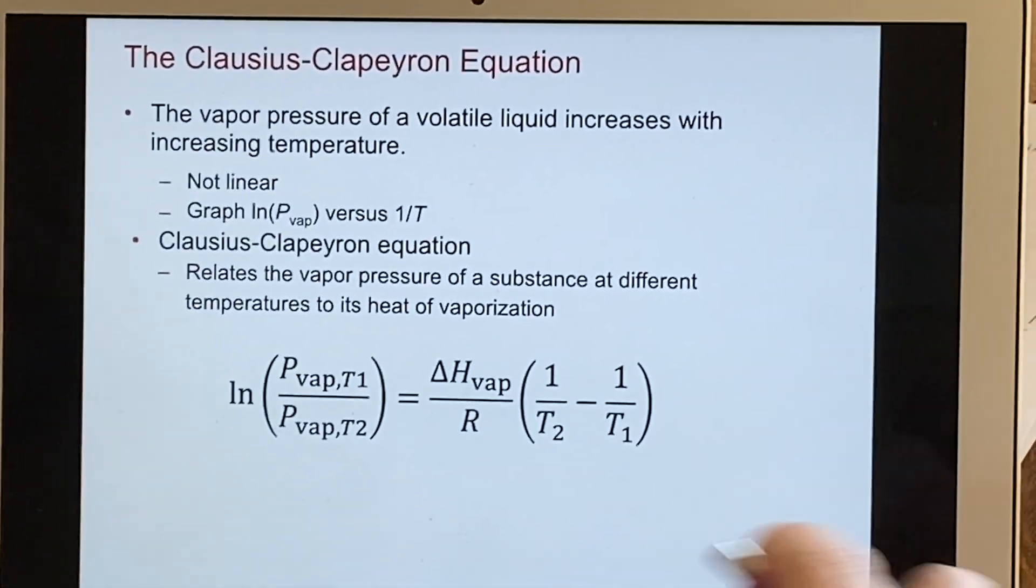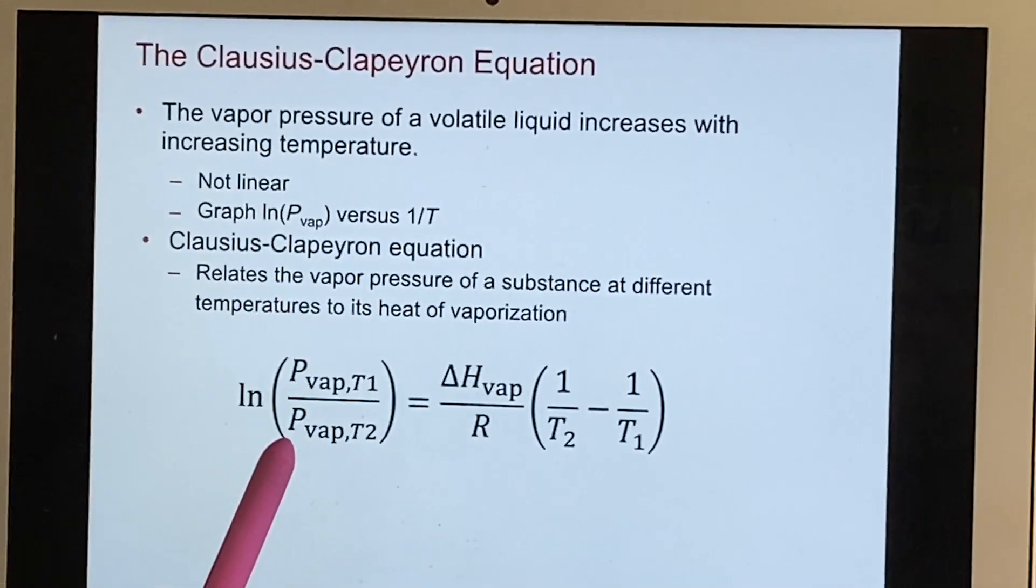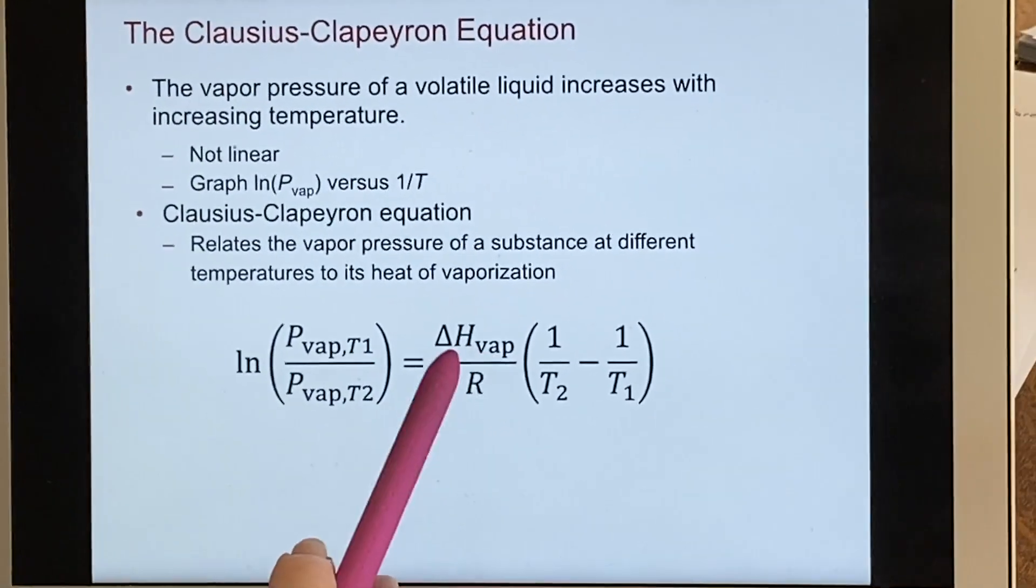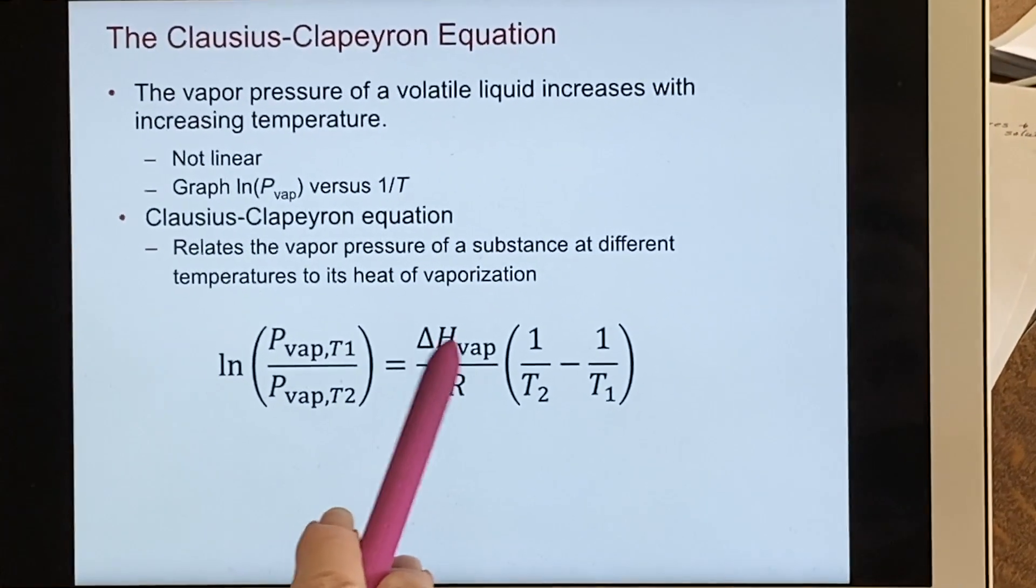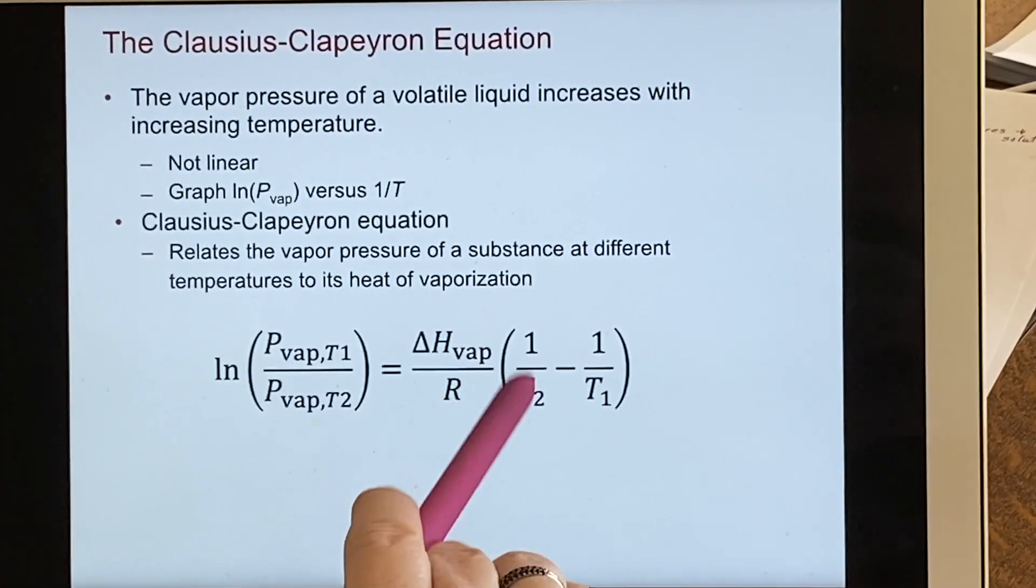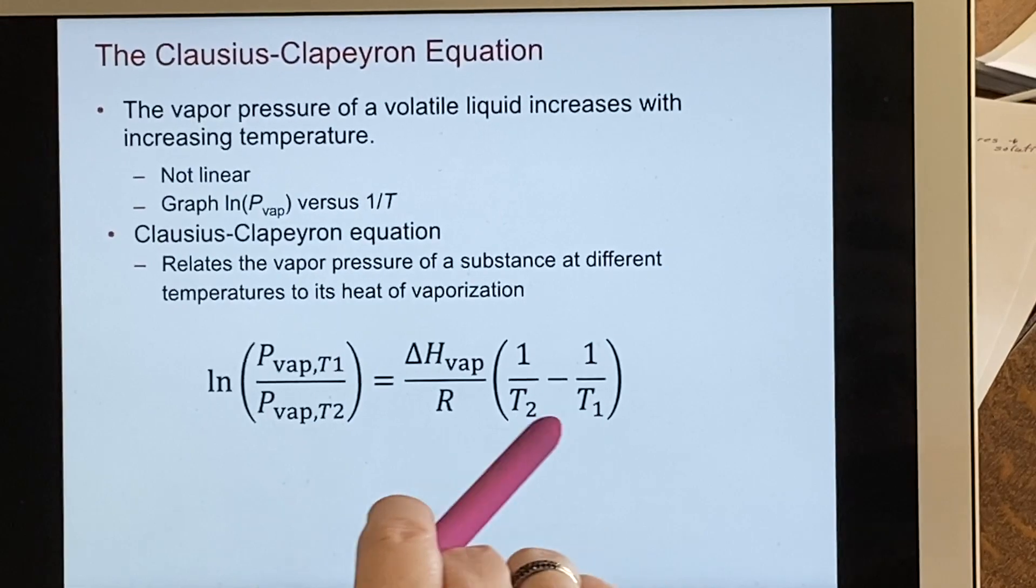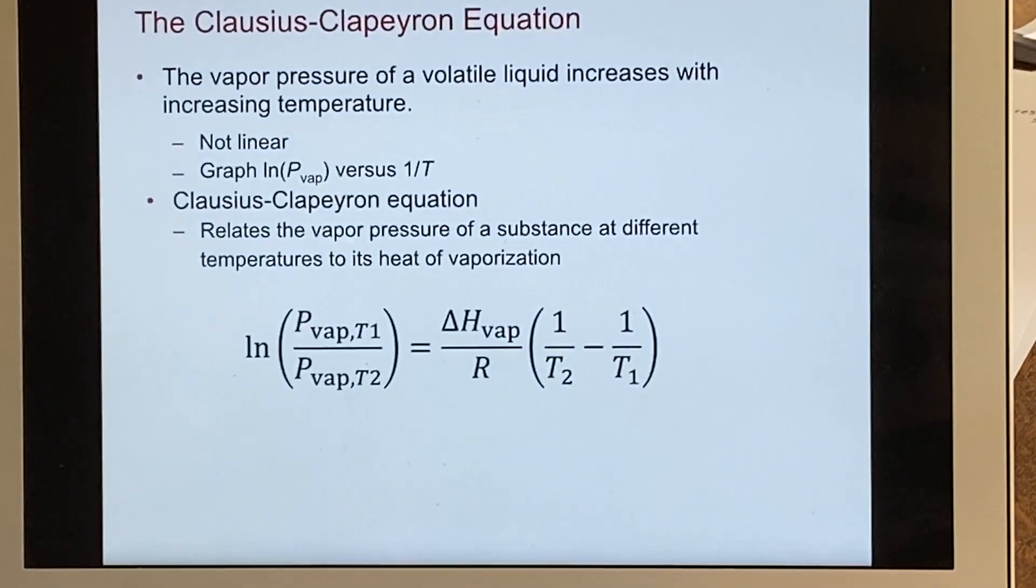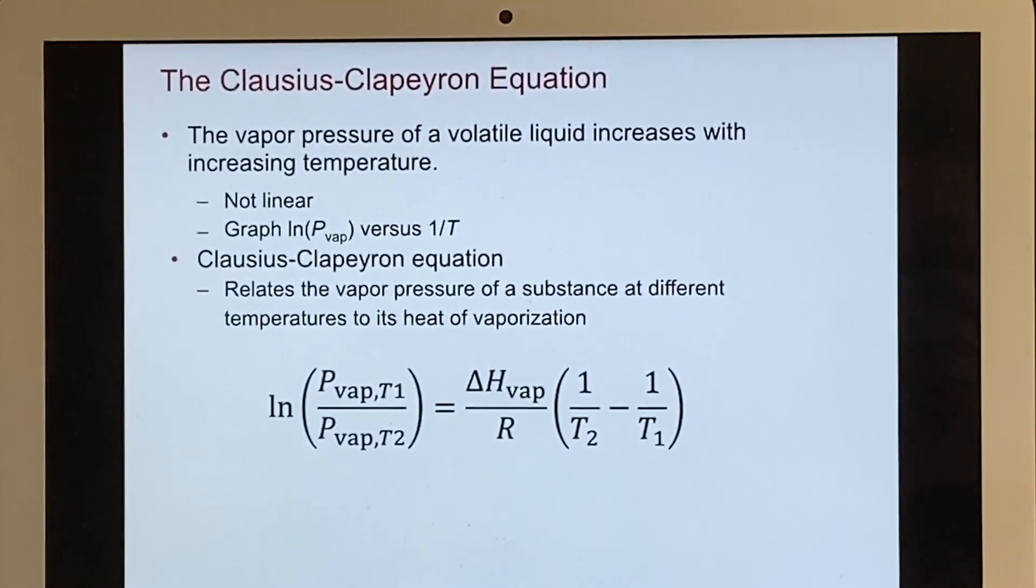So the Clausius-Clapeyron equation tells you about the vapor pressure of a particular substance. That's where the delta H comes in, because that's for the particular substance. And then, what are the temperatures that you're worried about? It's a more complicated equation than some of the others we've done.